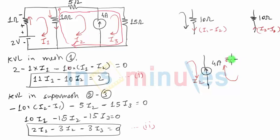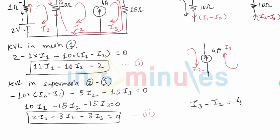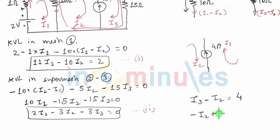The question is whether I2 minus I3 equals 4, or I3 minus I2 equals 4. That depends on the direction of the current source. Since the direction of the current source is upward, which is the same as the direction of I3, we take the difference as I3 minus I2, because we want 4 amperes to be the equivalent current flowing in the upward direction. So the third equation is: minus I2 plus I3 equals 4.